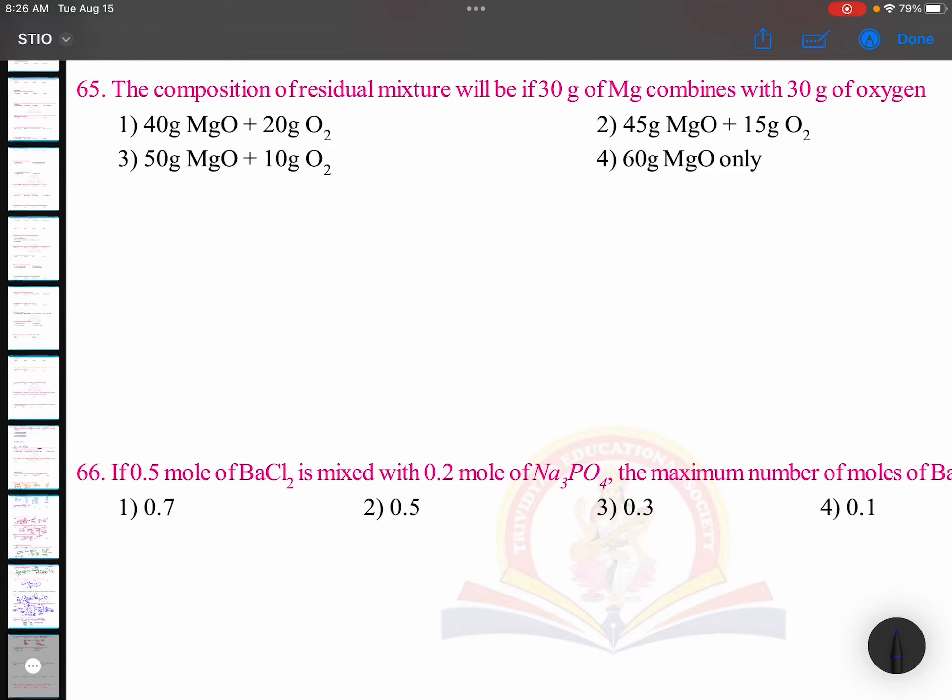The composition of residual mixture will be if 30 grams of magnesium combines with 30 grams of oxygen. See, Mg plus O2 gives rise to MgO. In order to balance this, we are converting like this: 2Mg + O2 → 2MgO. Now it clearly shows...